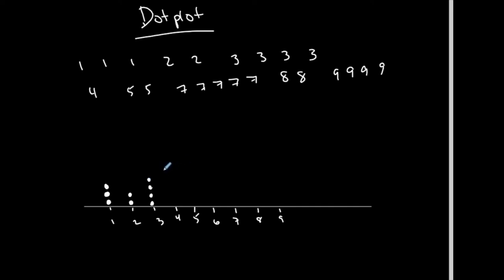You're not really going to want to create these by hand, you have programs to do these for you, but at least you know what they are and how they're created. I have one 4, 5 represented twice: 1, 2. Seven represented 5 times: 1, 2, 3, 4, 5. Six is not there, so I need to skip that. Eight is twice: 1, 2. Nine is 4 times: 1, 2, 3, 4. So again, boom, there's my dot plot. Beautiful.